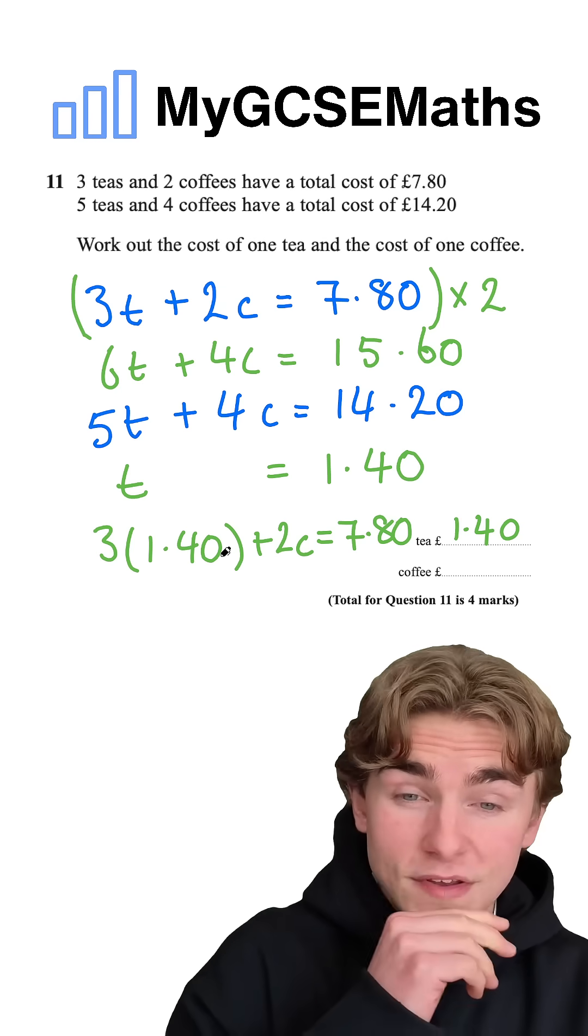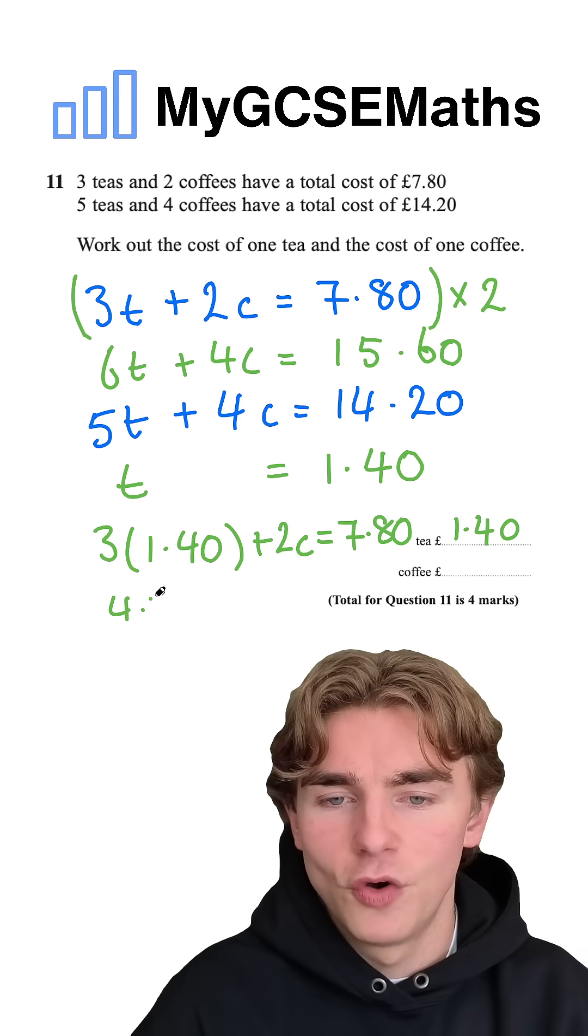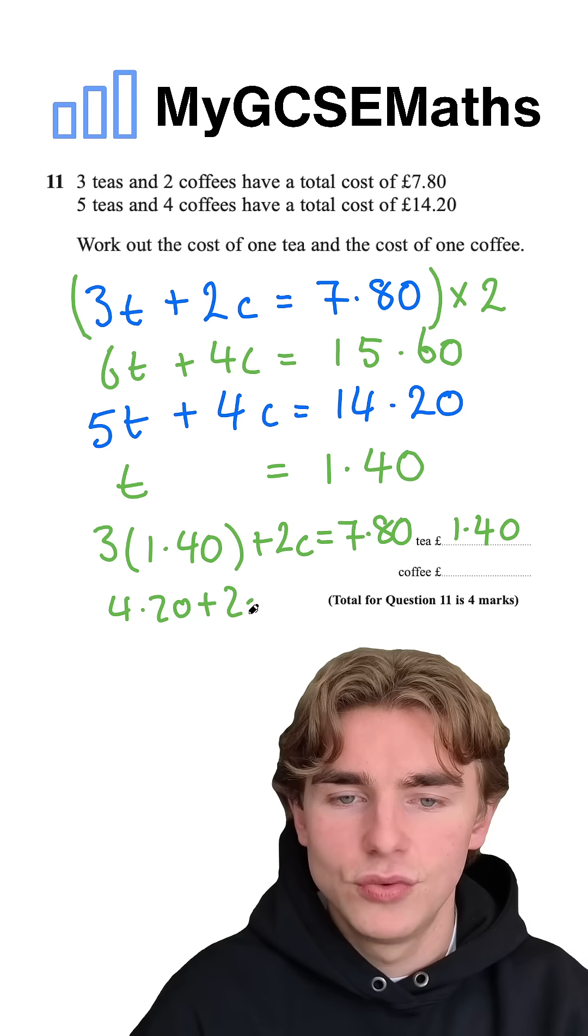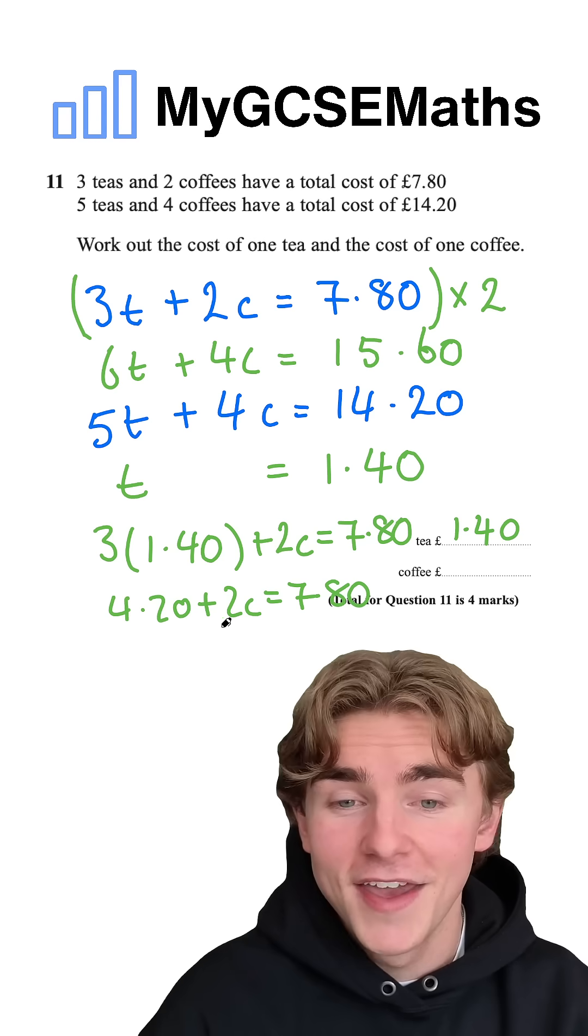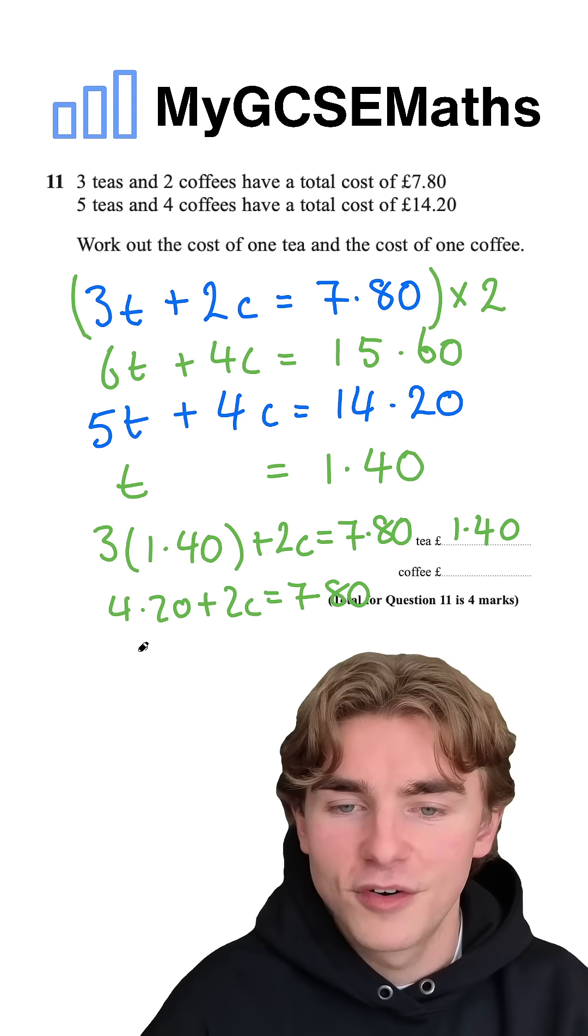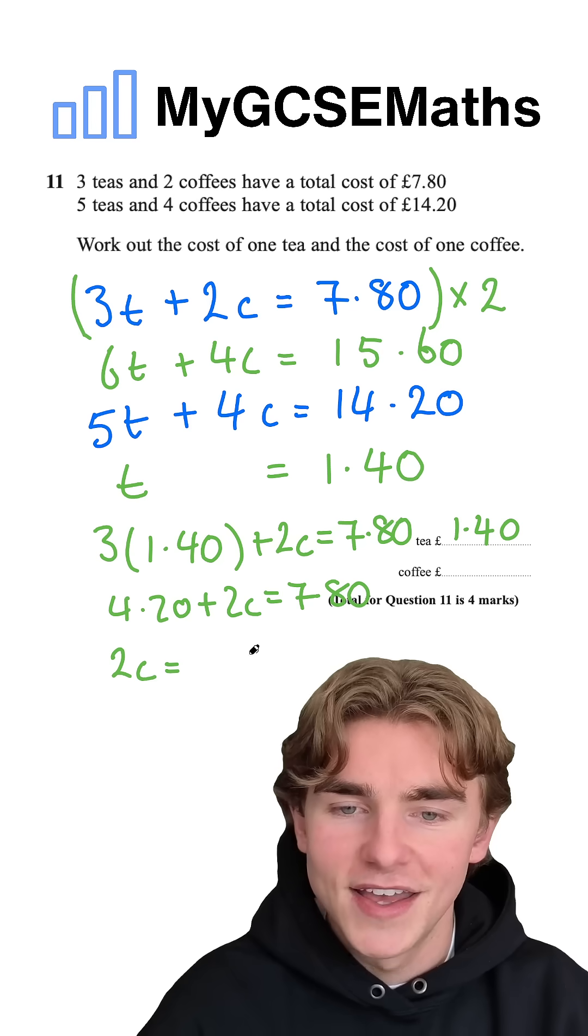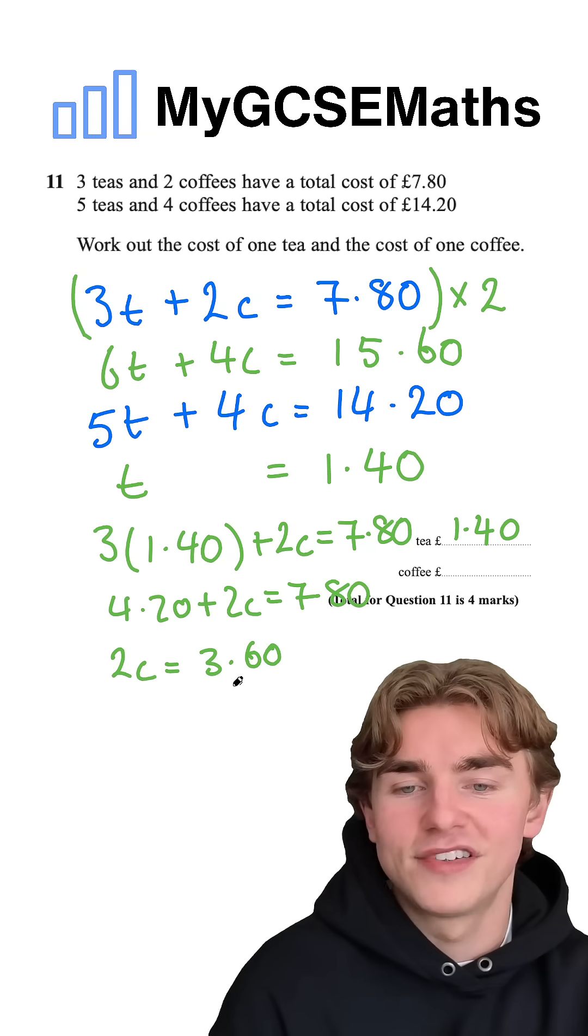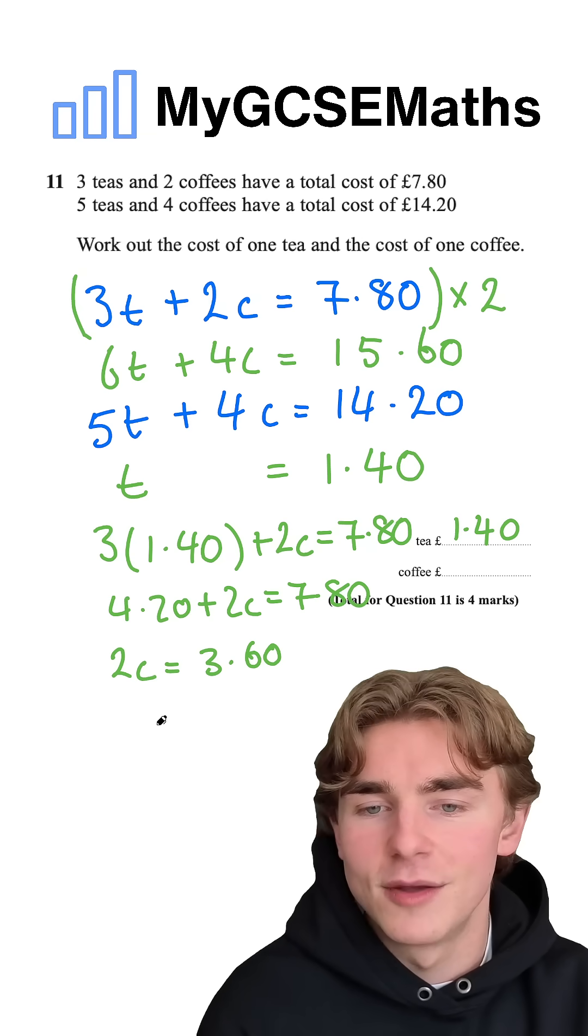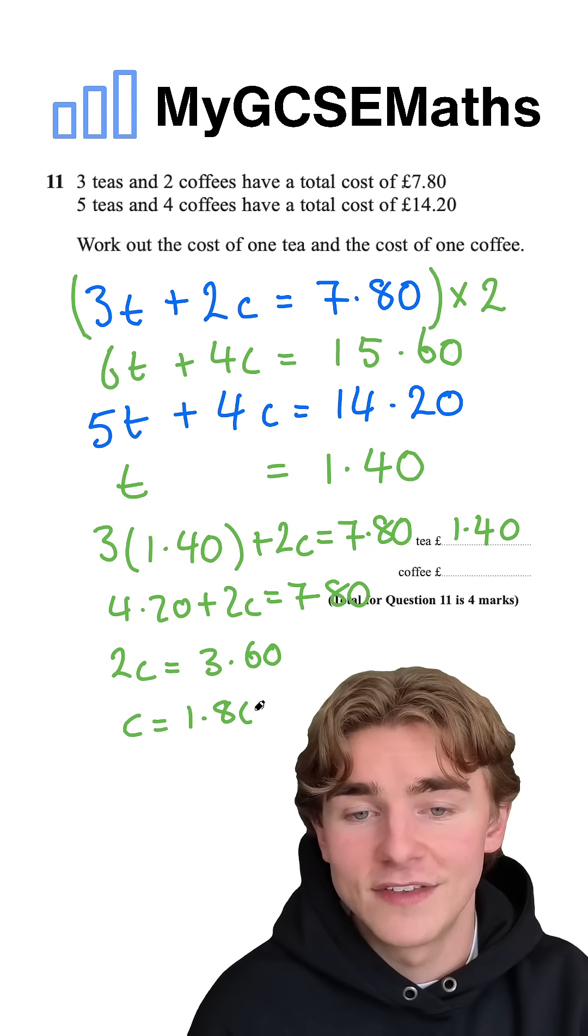Three times one pound 40 is four pound 20. So four pound 20 plus two c equals seven pound 80. Subtract four pound 20 from both sides. We get two c equals three pound 60. Then we divide both sides by two. Three pound 60 divided by two, so c equals one pound 80.